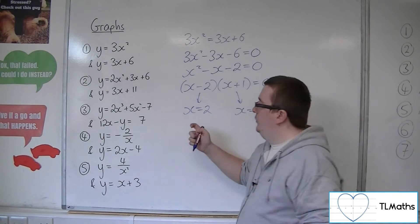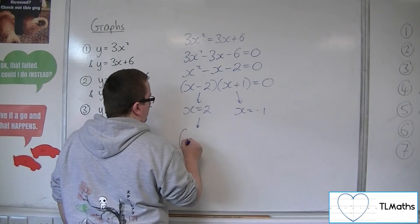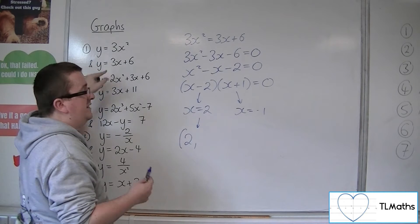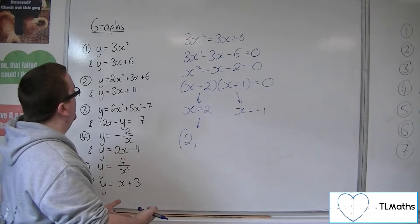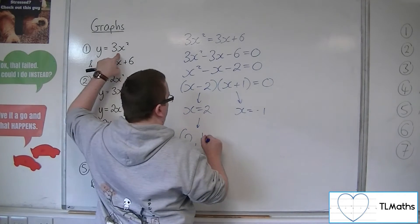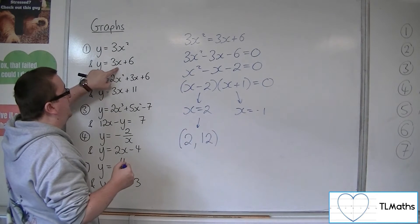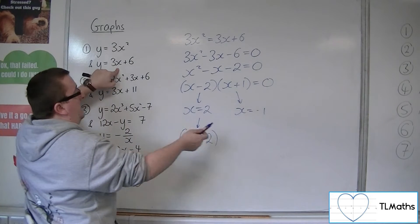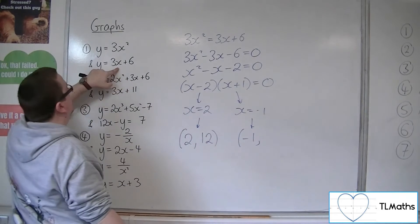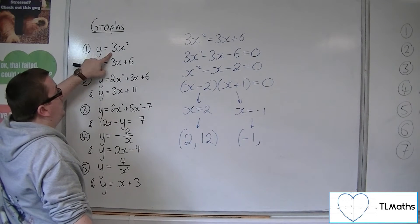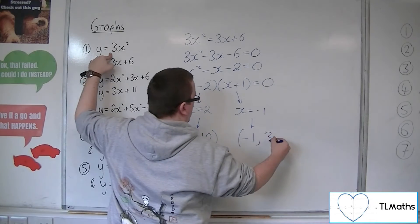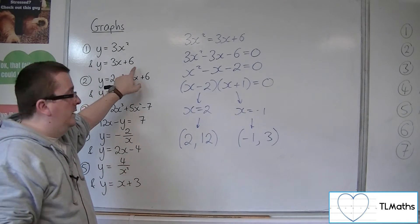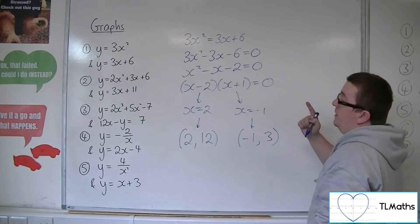So either x is 2 or x is minus 1. When x is 2, I can work out the y-coordinate by substituting into one of the two original equations — just substitute into the easiest one. So 3 lots of 2 squared is 12. Substituting into 3x plus 6: 3 lots of 2 is 6, plus 6 is 12. When x equals minus 1, substituting into the first equation gives 3 lots of minus 1 squared, which is 3. And 3 lots of minus 1 is minus 3, plus 6 is 3. So these are the two coordinates of where the curve and the line intersect.